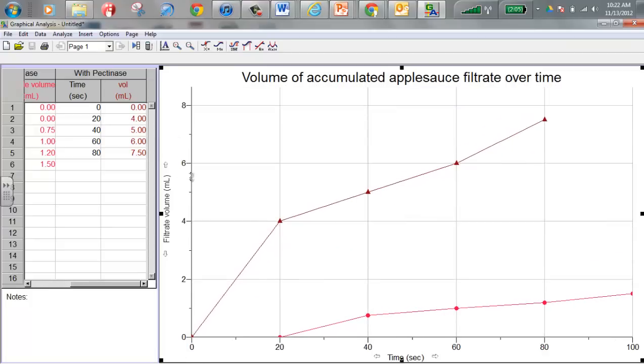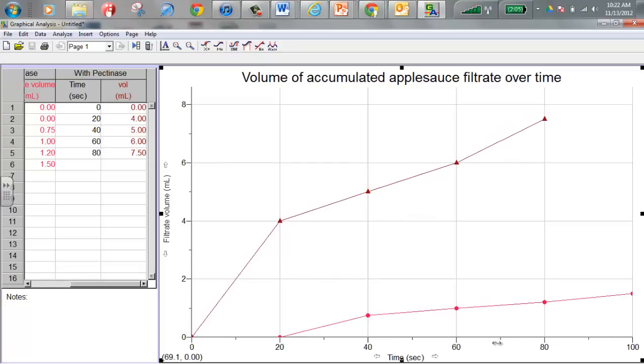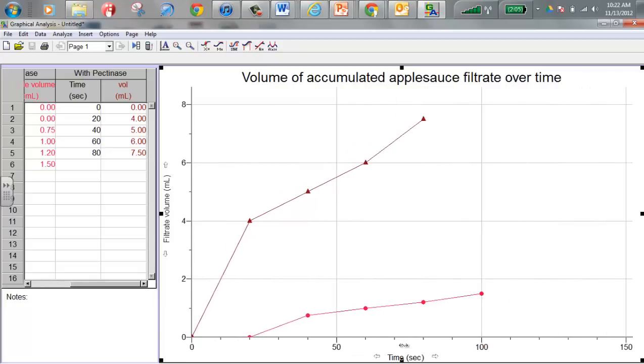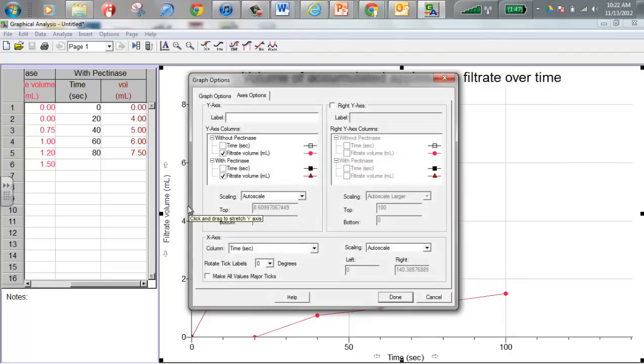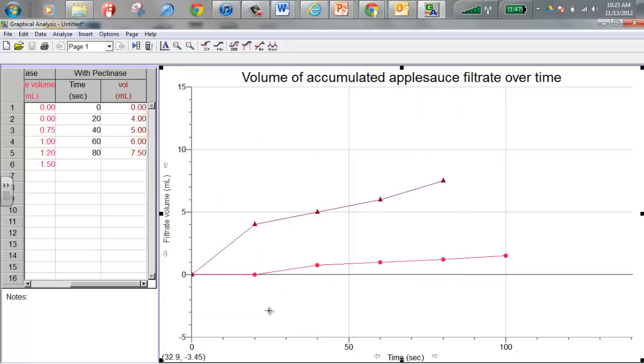A couple things you can do to make the graph look better - you can grab on the axis and click and drag, you can change the scale if you want to, both y-axis and x-axis. You can just grab and drag if you want to. Another thing you can do is you can double-click near the axis and get the Axis Options if you want to change the computer scale. You can manually change the scale. So I can go, let's say I want my top to be 15 milliliters and I want my bottom to be negative 5. I can do that if I want to and hit Done, and see how it shows down here? Here's negative 5 and it went all the way up to 15. So Graphical Analysis is cool like that - you can change a lot of stuff.